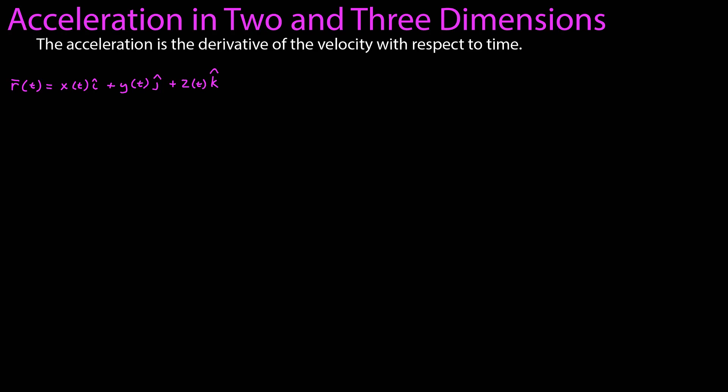If we have a third dimension, that just adds a third term along the z-axis, but for simplicity, we'll just work with two. We know that the velocity is the derivative of the position, so if we take that derivative, we have a velocity vector function where the components are the x component of the velocity that can vary with respect to time and the y component of the velocity.